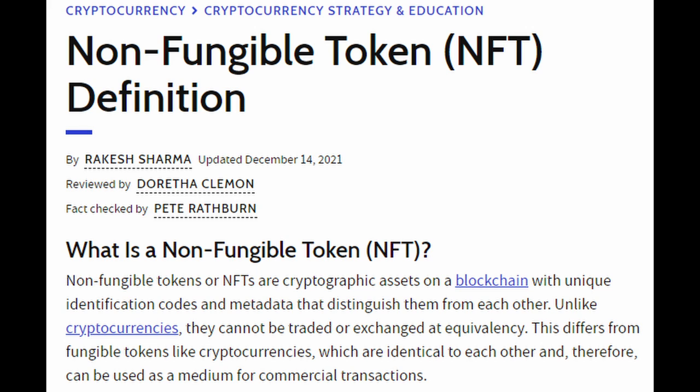Unlike cryptocurrencies, they cannot be traded or exchanged at equivalency. Think about Bitcoin — if you had one Bitcoin, you could trade it for another Bitcoin and it would amount to the same thing. Bitcoin and other cryptocurrencies are fungible because they can be traded, replaced, and exchanged. However, if I had a piece of art — say an artist painted my face — that would be non-fungible because it's one of a kind and I wouldn't be able to exchange it for another one because it would be the only one available.